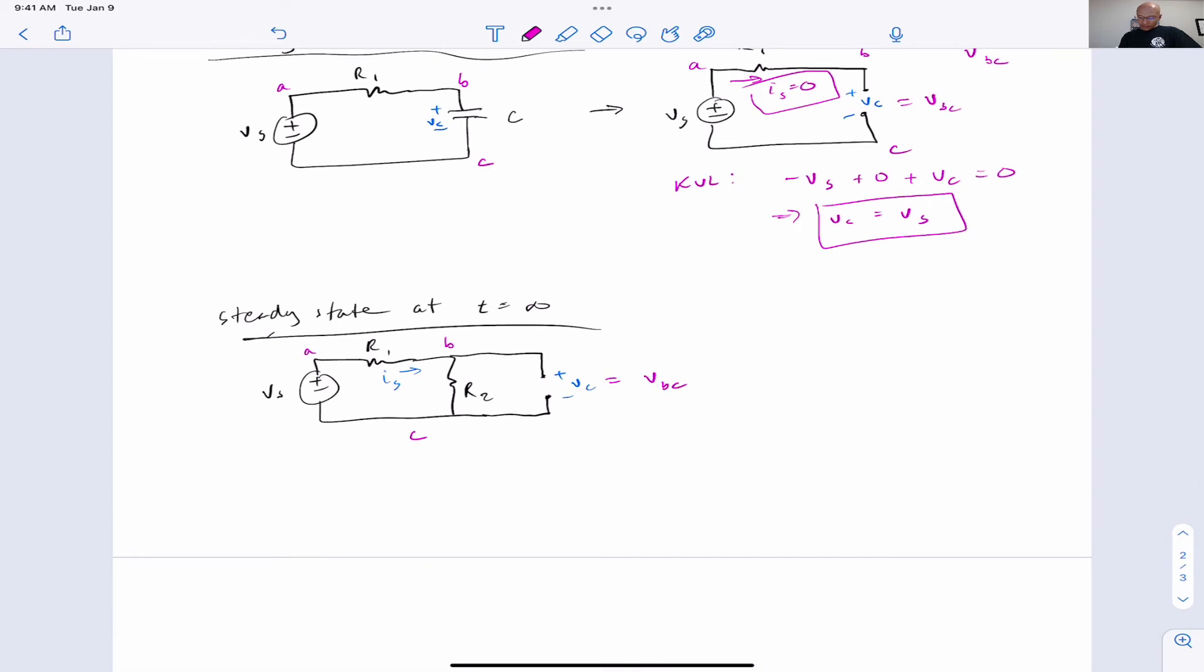And if you pay attention to this current IS, well, R1 and R2 are connected in series, because at node B they are connected, but there's no other current carrying connections there. So this is also IS going through R2.